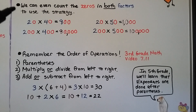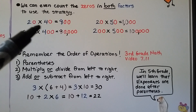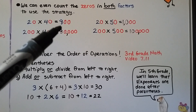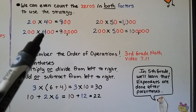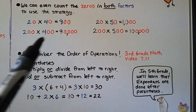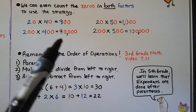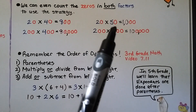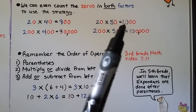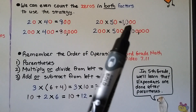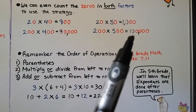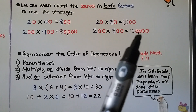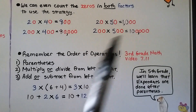We can count the zeros in both factors using this strategy. For 20 times 40, the basic fact 2 times 4 is 8, and there are two zeros in the factors, so the product is 800. For 200 times 400, the basic fact is still 2 times 4 equals 8, but there are four zeros in the factors, so the product is 80,000. For 20 times 50, 2 times 5 equals 10, with two zeros in the factors added after the 10, giving 1,000. For 200 times 500, 2 times 5 equals 10 again, with four zeros in the factors, giving 100,000.